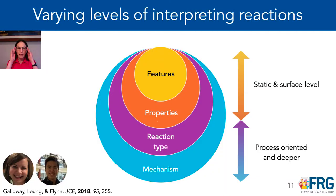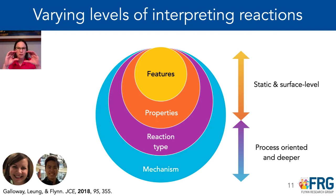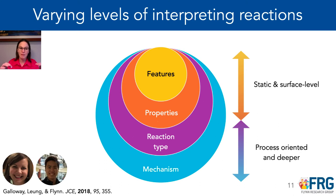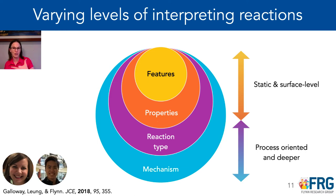The surface-level sorting included the features they saw: the functional groups, the properties, electronegative atoms — more static, surface-level characteristics seen primarily in undergraduate and master's students. PhD students and professors sorted more by reaction type and mechanism, getting at the process-oriented and deeper thinking in chemistry — what the molecules do rather than what they are.